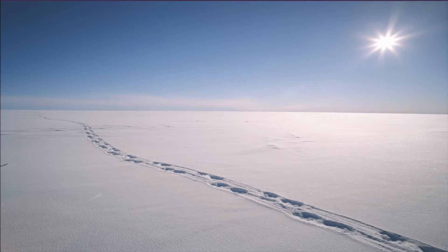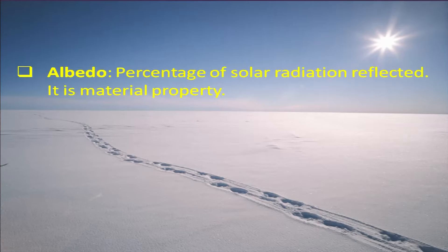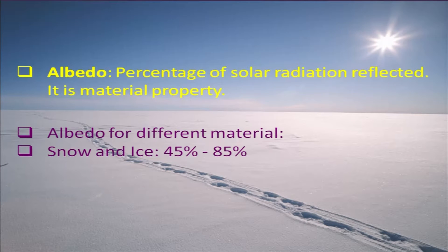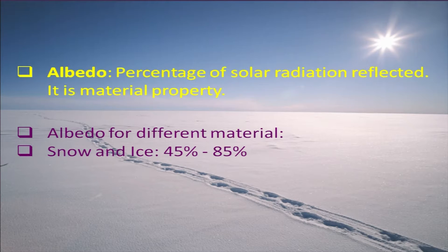First, this slide shows where we were talking about the reflectivity from different objects and the surface of the earth. Albedo is basically the percentage of solar radiation reflected — it is a material property, so different materials will have different albedo. For example, snow has an albedo of around 45 to 85 percent, meaning most of the light coming from the sun is reflected back to the atmosphere, which is very important for energy balance.